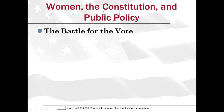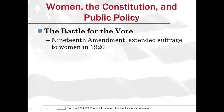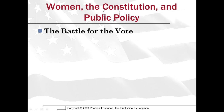The legal doctrine of coverture deprived many women of any identity separate from that of their husbands, and in many states women couldn't own property, file for divorce, or testify in court or bring charges. Women like Lucretia Mott and Elizabeth Cady Stanton organized a meeting at Seneca Falls, New York to discuss women's rights and put out the Seneca Falls Declaration of Sentiments and Resolutions, which was based on the Declaration of Independence.